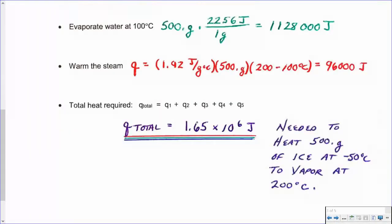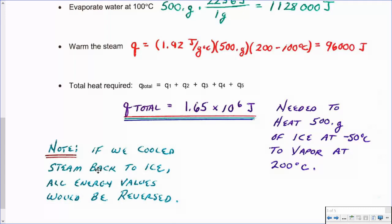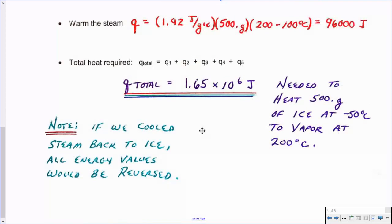That would be the energy needed to heat 500 grams of ice from minus 50 to 200°C. It's important to note that if we were to cool it back down and go in the opposite direction, these temperatures would be reversed for the final minus the initial, giving us a negative sign on our Q value. Likewise, if we were condensing the gas into a liquid, the heat of vaporization values would be reversed — we'd have a negative 2,256 going from the gas back into the liquid. So watch out for the signs: it all depends on which way you're going in these phase changes — are you putting energy in or giving energy off?